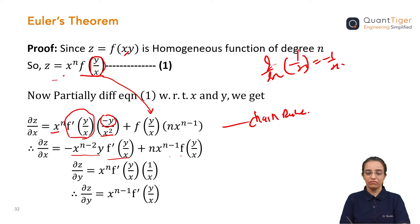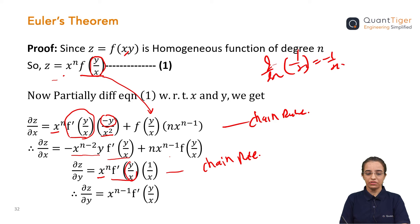Similarly, I can differentiate the given function with respect to y. So ∂z/∂y — I apply the same chain rule. The first function x^n is kept as is, times the differentiation of f(y/x), which is f'(y/x), times the derivative of (y/x) with respect to y, which is 1/x. Since x^n divided by x gives x^(n−1), we get ∂z/∂y = x^(n−1) · f'(y/x).